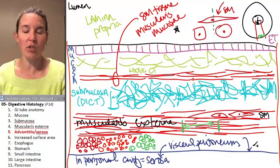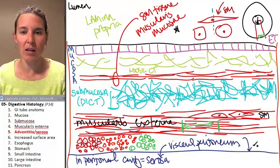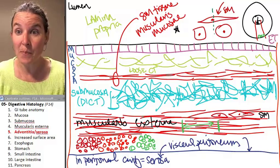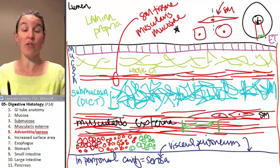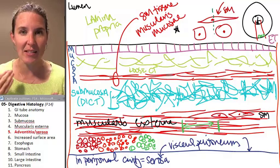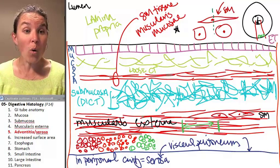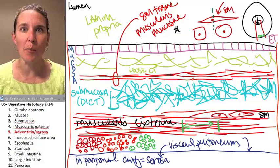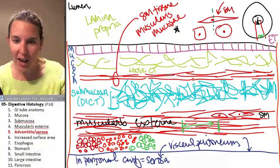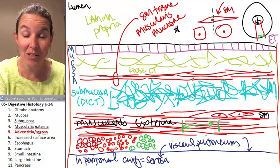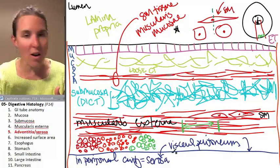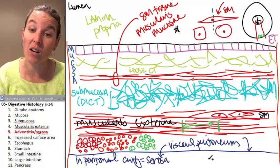Now, are all parts of your tube in the peritoneal cavity? Dog pounds, no. So sometimes the tube is either in the thoracic cavity, like the esophagus, most of the esophagus, or it is retroperitoneal, like the duodenum. Remember the duodenum hung out behind the peritoneum? And if it is retroperitoneal or not in the peritoneal cavity, then it's called adventitia.